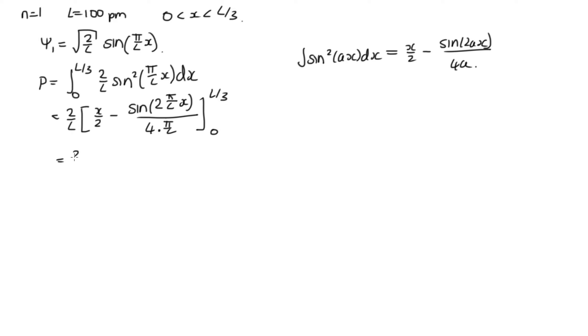So this is equal to 2 over L times L over 3 divided by 2, so that's L over 6 minus, now we've got 4 pi over L down the bottom. So this L actually comes up the top and then we've got the 4 pi. That's just divided by 4 pi over L. And then we've got the sine of 2 pi over L times L over 3.